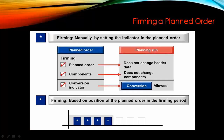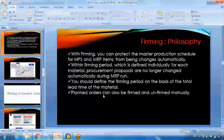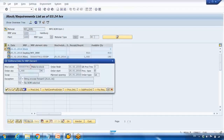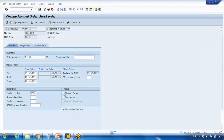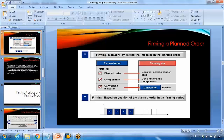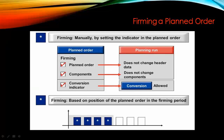There are three types of firming. The first is for the planned order header — the planned order indicator means anything in the planned order header cannot be changed. Let me show this practically: if I open a planned order, you have three boxes — planned order, component, and conversion indicator. You can press F1 on any of them to see more detail. When you check the planned order checkbox, it means the header of the planned order cannot be changed.